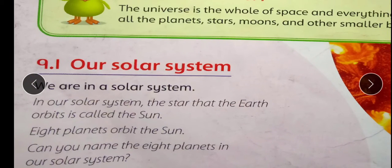Our solar system. Hamara solar system. We are in a solar system. Hamara ek solar system hai. In our solar system, hamare solar system mein, the star that the earth orbits is called the sun. Ham ek solar system mein hain aur hamare solar system mein, ek sitara, jiske gird zameen ghoomti hain. Is called the sun, sooraj kehlata hai.